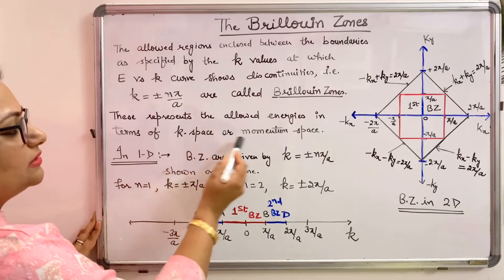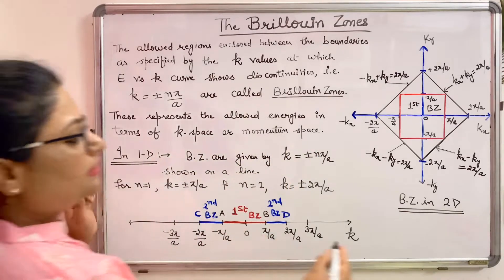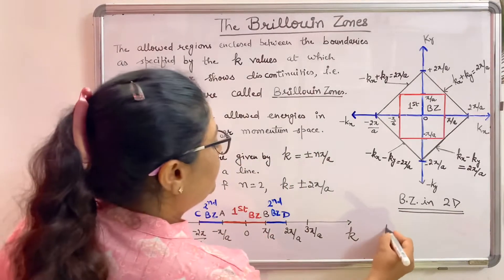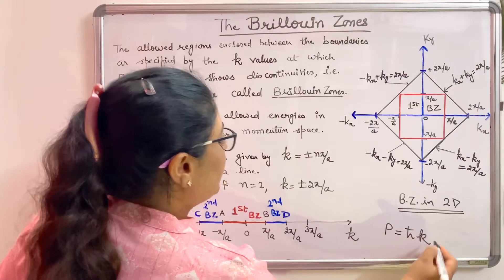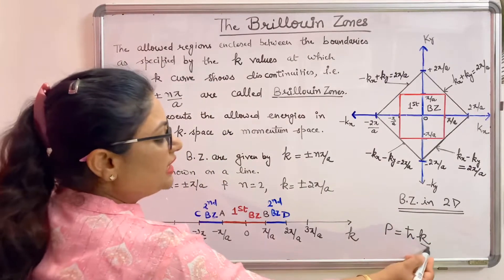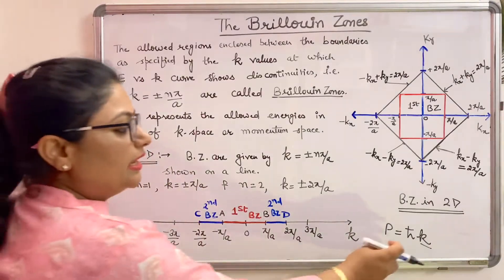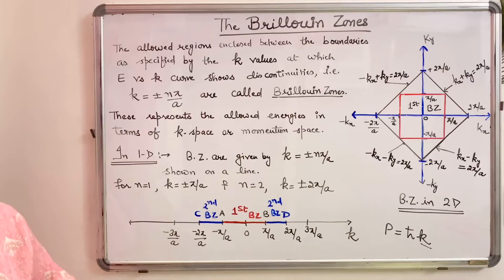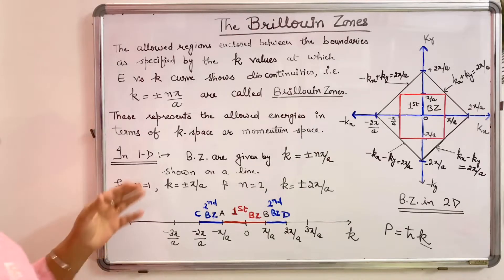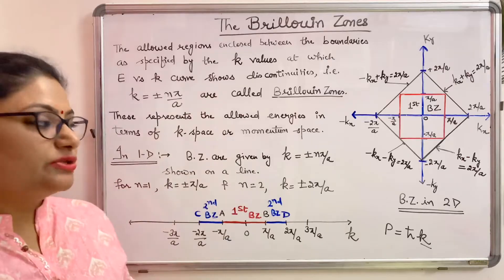These Brillouin zones basically represent the allowed energies in terms of k-space or momentum space. We have seen that momentum p of the particle is h-bar times k, so k represents the allowed regions. This means we get the allowed values of momentum for the particle, and in turn, the allowed energies in terms of k values through these Brillouin zones.